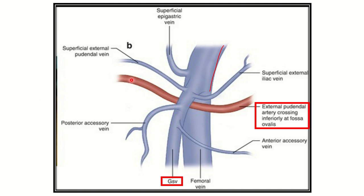Here we can see an artery which goes below the saphenous vein. This artery is the external pudendal artery, crossing inferiorly at the fossa ovalis. This artery is passing below the great saphenous vein and above the femoral vein — this is the external pudendal artery.